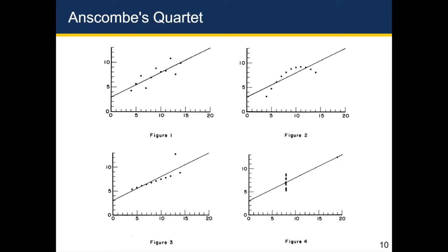But in point of fact, in figure two, the relationship is a curve. In figure three, there's one extreme outlier, while the rest of the relationship is linear.